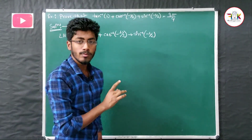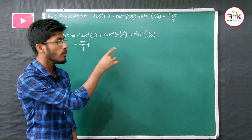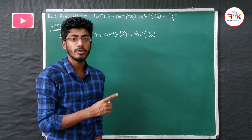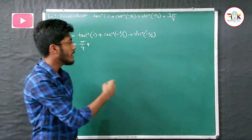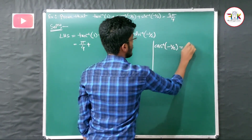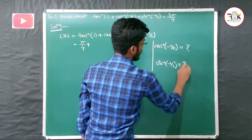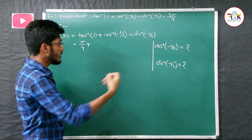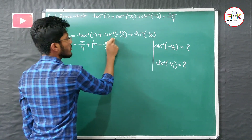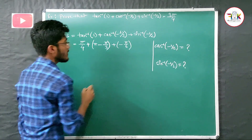Now we find the values: tan⁻¹(1) = π/4. For cos⁻¹(-½), the value is π - π/3. And for sin⁻¹(-½), the value is -π/6.